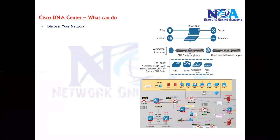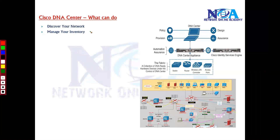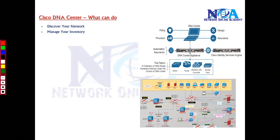Based on that, it's going to identify the device and add those devices into the inventory list. So that's what the discovery option is about — identifying your devices and adding them to the inventory list. Once the devices are added to the inventory list, with the help of DNA Center we can manage those inventories and retrieve information about the devices present in the network, like IP address, MAC address, and network attachment point.